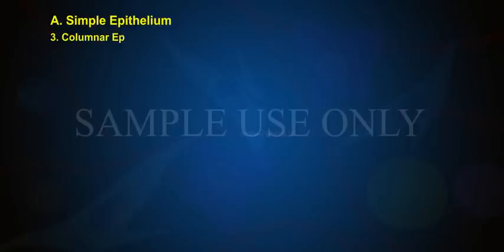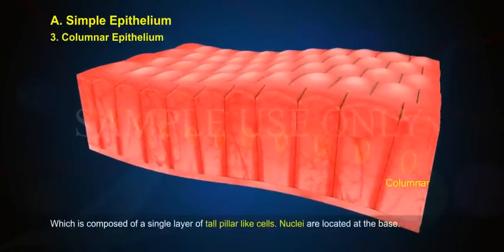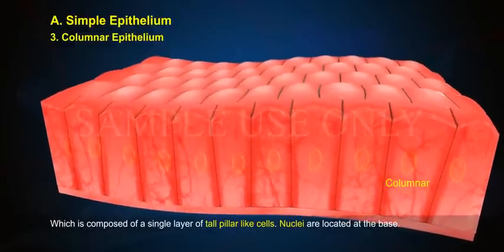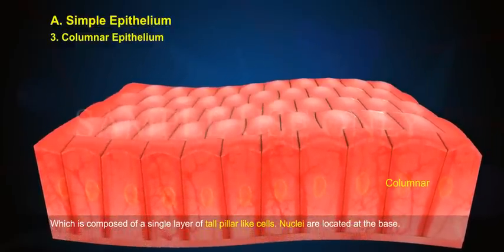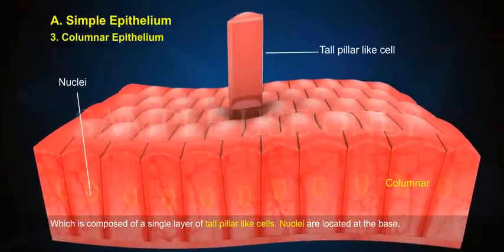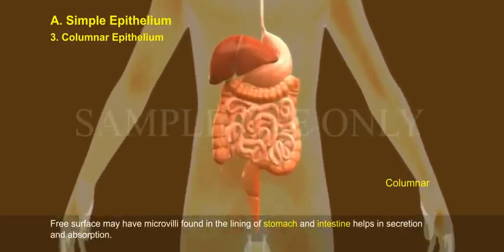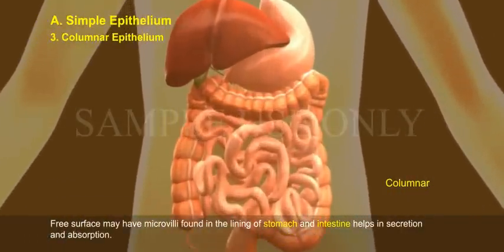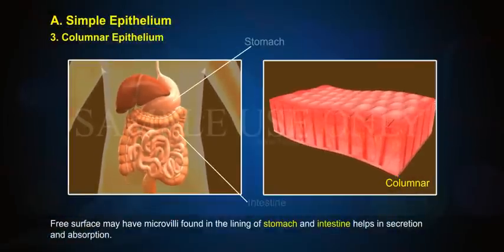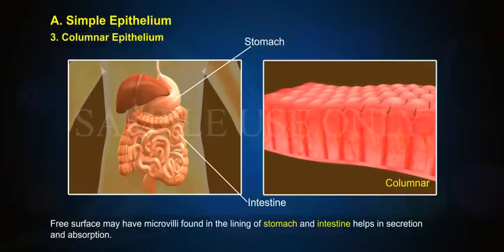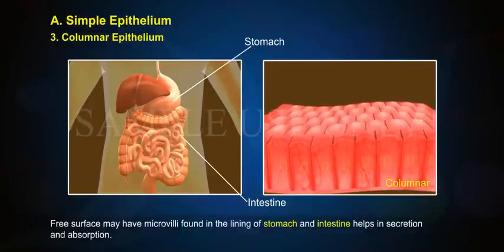3. Columnar epithelium, which is composed of a single layer of tall pillar-like cells. Nuclei are located at the base. The free surface may have microvilli, found in the lining of stomach and intestine, helping in secretion and absorption.